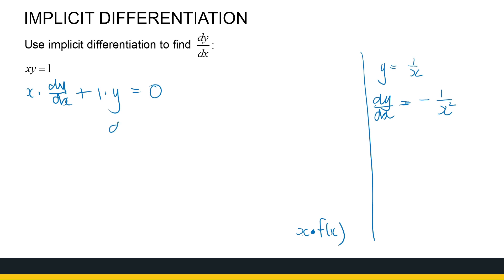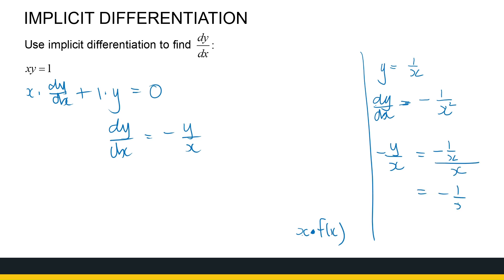We can make dy/dx the subject of the formula, giving dy/dx = −y/x. Now is that really the same? Well, if y = 1/x, then −y/x = −(1/x)/x = −1/x². So we get the same answer. That's just to show you implicit differentiation works. Take note of the product rule.